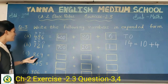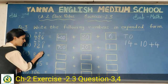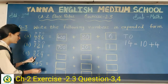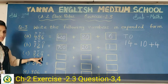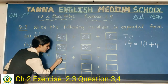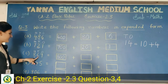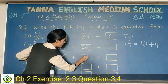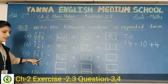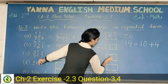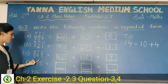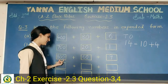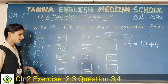Next: eight hundred and sixty-nine. At hundreds place we have eight — so eight hundred, two zeros after eight. Then six is at tens place — one zero — so sixty. Then at ones place we have nine, so write nine. The expanded form of eight hundred and sixty-nine is: eight hundred plus sixty plus nine.